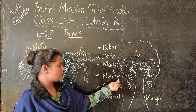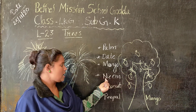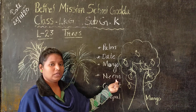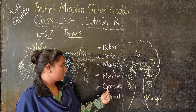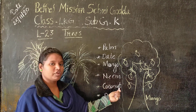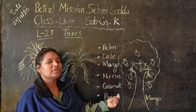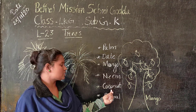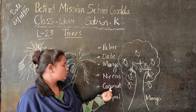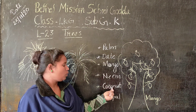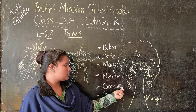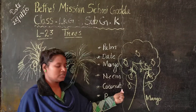And neem tree. The spelling of neem is N-E-E-M. Next one, coconut tree. From coconut tree we get coconut. The spelling is C-O-C-O-N-U-T. Coconut.